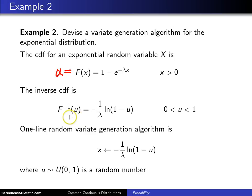Which is F inverse of u equals negative 1 over lambda times the natural log of 1 minus u, for any u value between 0 and 1.